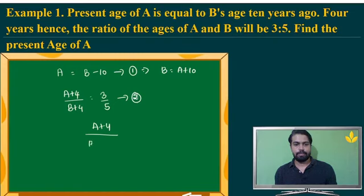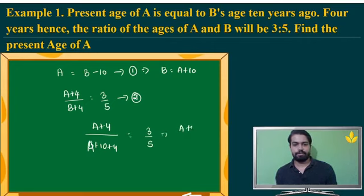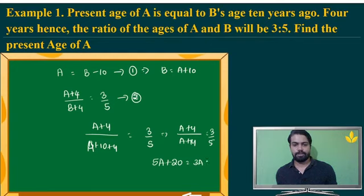That is going to be: A plus 10 plus 4 divided by A plus 4 is equal to 3 by 5. Now we can solve this by cross-multiplying. 5A plus 20 is equal to 3A plus 42. When I solve this further, I get 2A is equal to 22. So, A is equal to 11 years. The age of this person is 11 years.